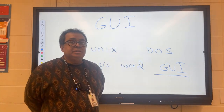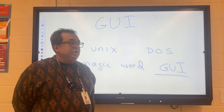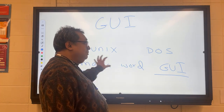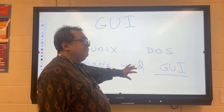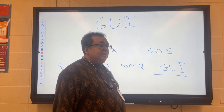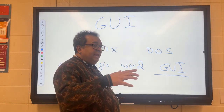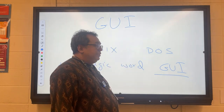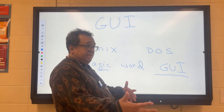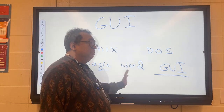I'd like you to turn to the person next to you and decide what's good and bad about these two approaches. Why is GUI better? Why might the magic word approach be better? What are the advantages and disadvantages of having a graphical interface versus a set of words to tell the computer what to do?